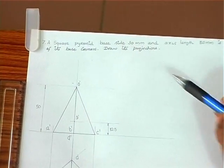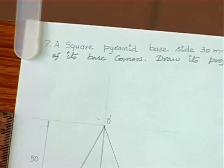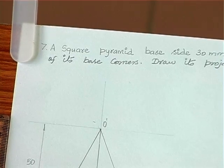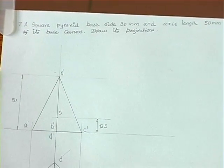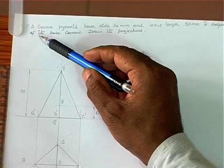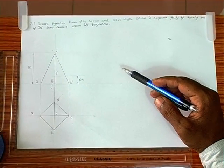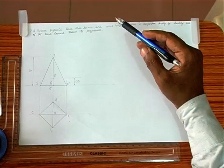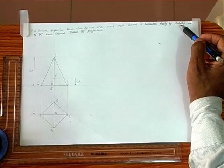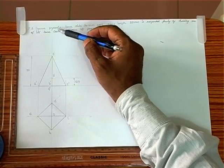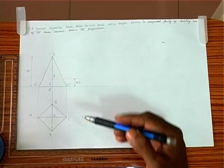A square pyramid with base side 30 mm and axis length 50 mm is suspended freely by holding one of its base corners. The square pyramid is held freely by holding one of the base corners. Draw its projections.